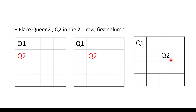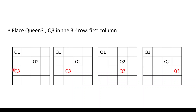Now let's check Q3, placing it in the third row. Column 1 is not possible — Q1 is already there. Column 2 is not possible — Q2 and Q3 would be on the same diagonal. Column 3 is not possible — Q2 and Q3 would be in the same column. Column 4 is not possible — Q1 and Q3 would be on the same diagonal. None of the columns in the third row can accommodate Q3.